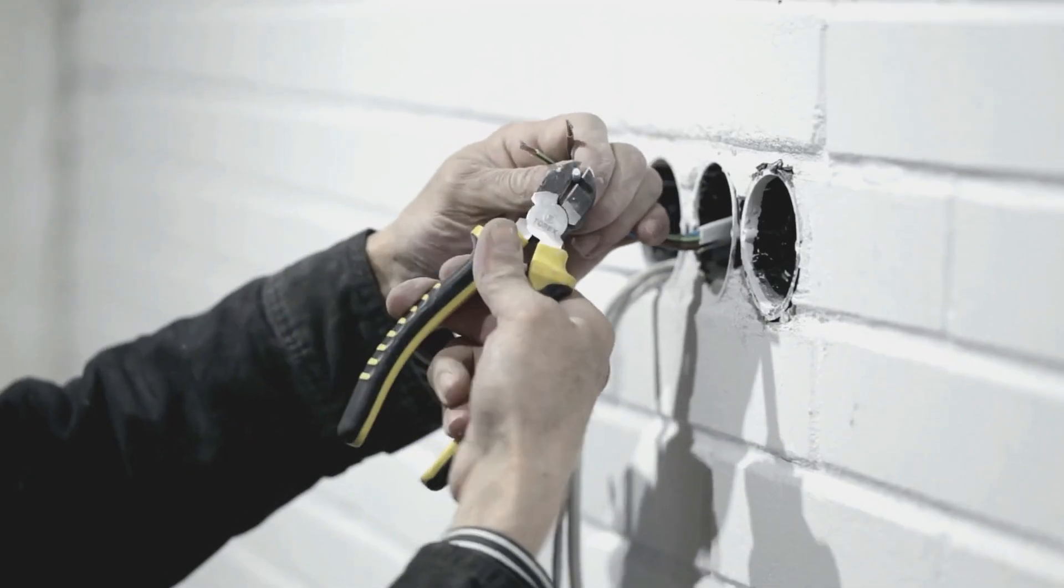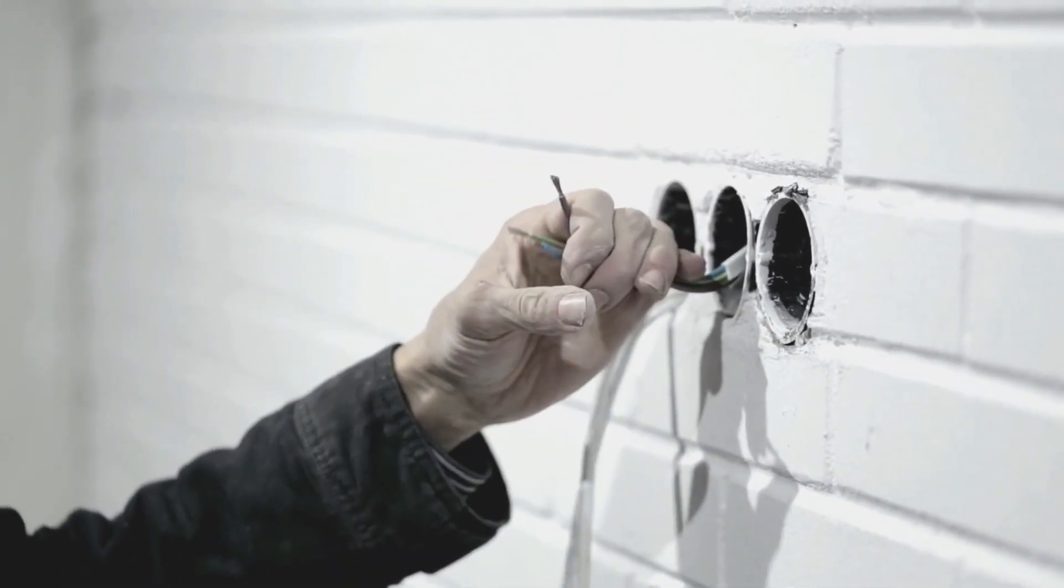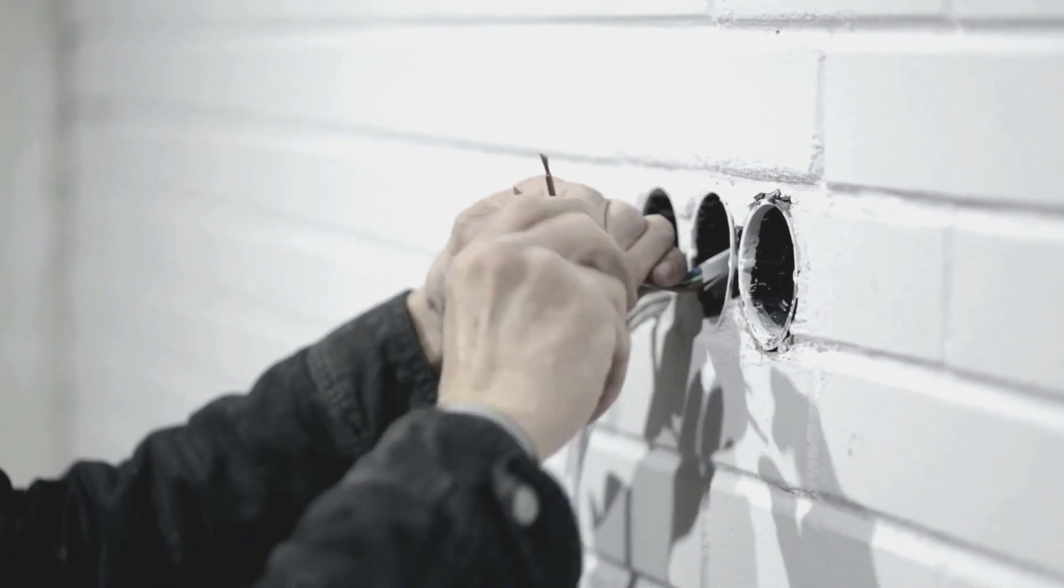Ground wires are typically bare copper, though sometimes they have green insulation. They offer a very low resistance path for electricity, which makes it easier and quicker for the current to return to the source during a fault.